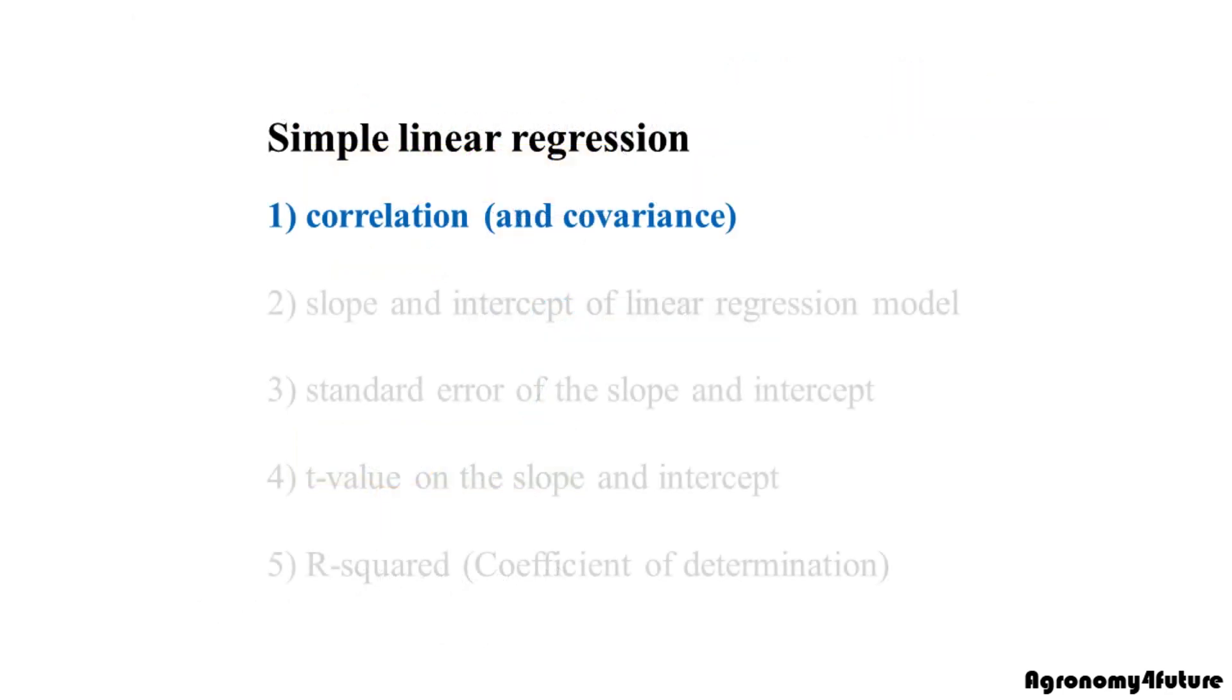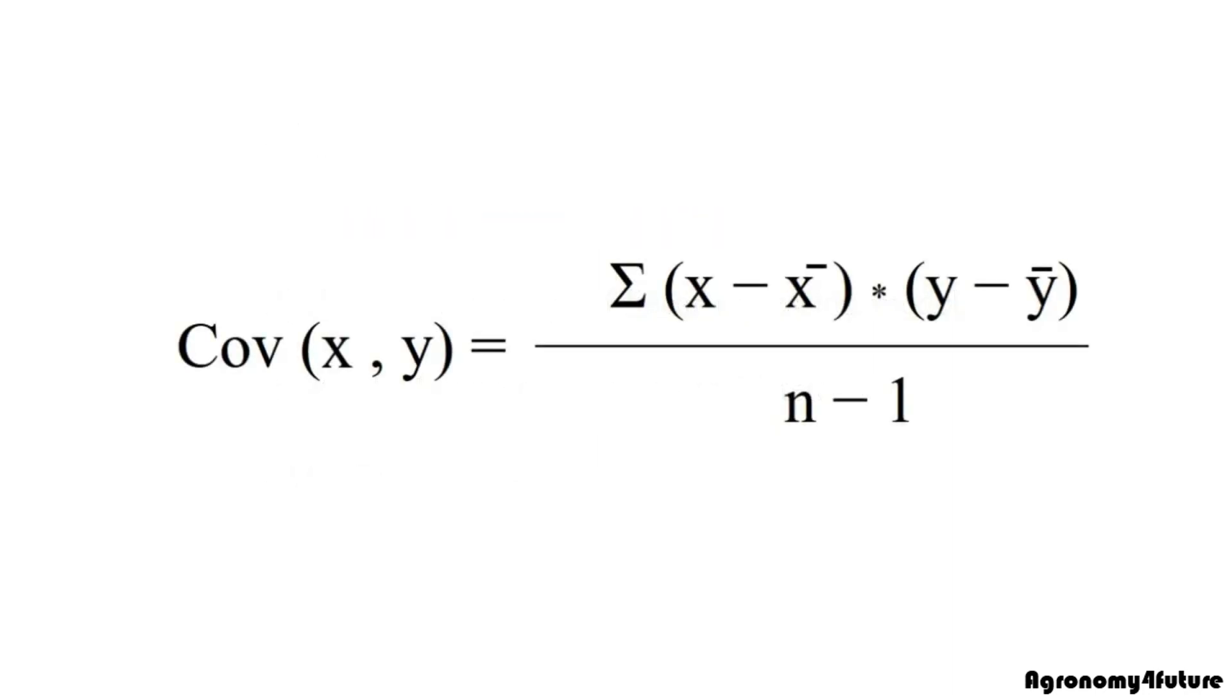First of all, I'll introduce what correlation is. Correlation is a statistical measure that expresses the extent to which two variables are linearly related. To understand correlation, first we need to understand covariance. Covariance is a statistical measure to show the relationship between two random variables and to what extent they change together. Generally speaking, correlation and covariance is the same concept. Only difference is the ratio of standard deviation of x and y. I'll explain why. This is the equation of covariance.